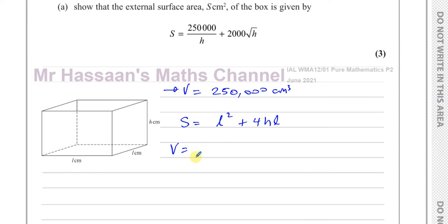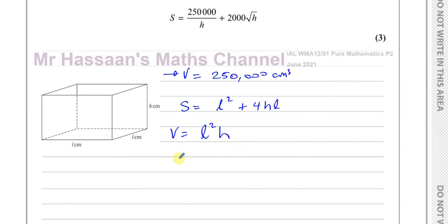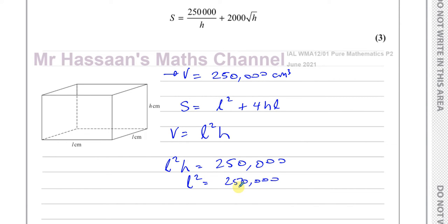We can write an expression for the volume: height times width times length, which is L squared times H. We know that volume equals 250,000 centimeters cubed. So L squared times H equals 250,000, which means L squared equals 250,000 divided by H.